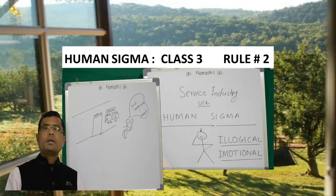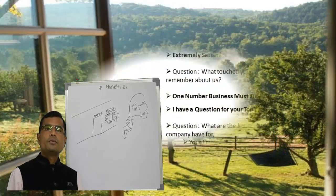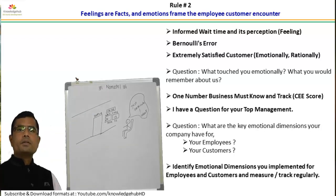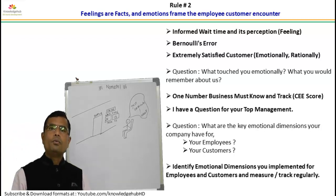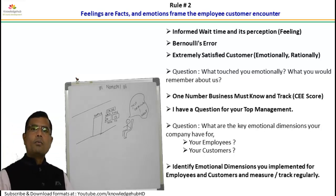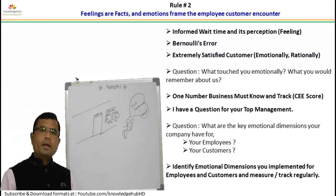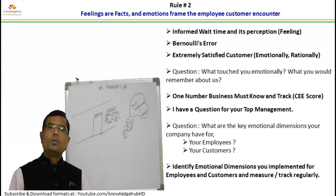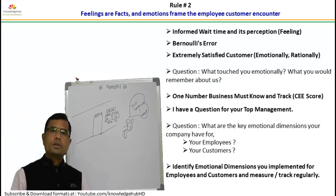Welcome to chapter number two. In the last two videos, you have seen why we should not implement Six Sigma in the service industry. In video one and video two, we covered rule number one of Human Sigma. In this video, we are going to see rule number two. In Human Sigma, there are a total of five rules.